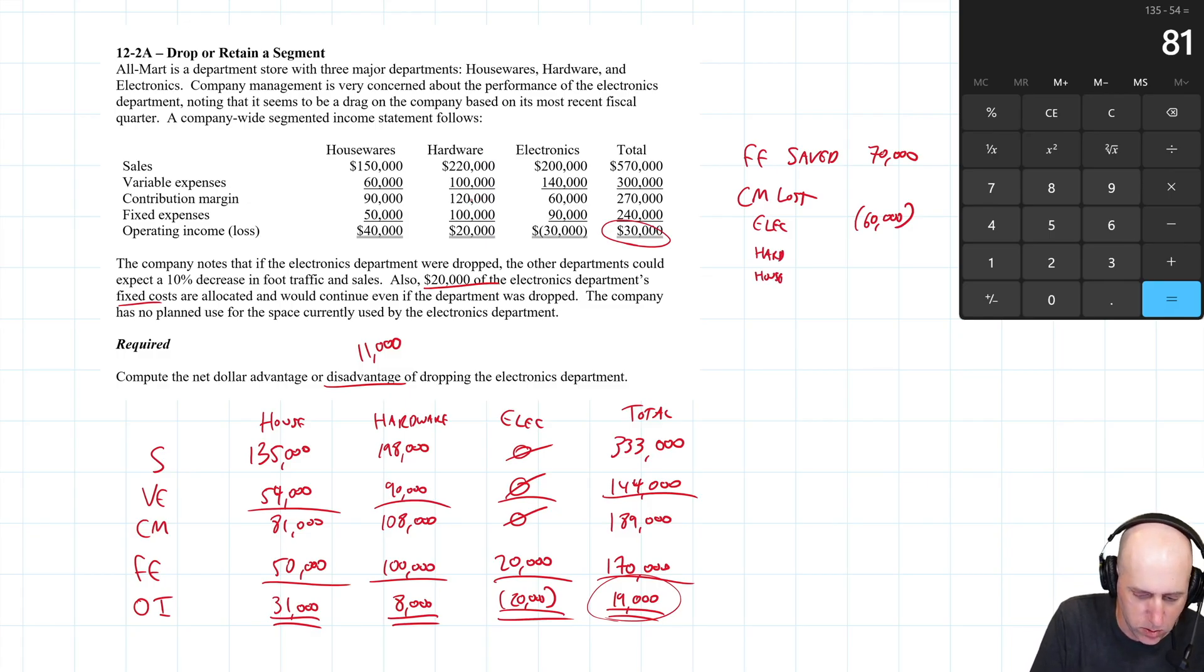In hardware, our contribution margin is $120,000. We're losing 10%, so we're losing $12,000 because we lose 10% of our foot traffic and sales. In housewares, we lose $9,000. If we add up our total CM lost, it is 60, 72, 72 plus 9, 81. We're losing $81,000. We're saving $70,000 in fixed costs to lose $81,000. Overall, there is a disadvantage. And the reason I'm saying disadvantage is because it's a negative number here of $11,000.